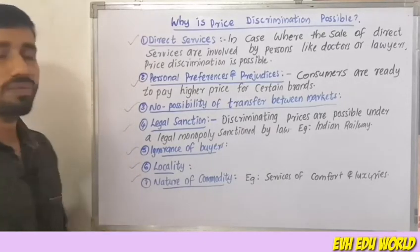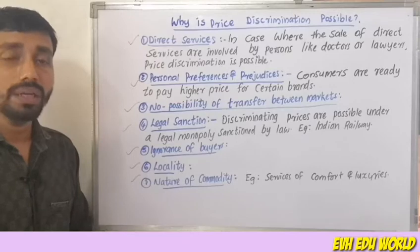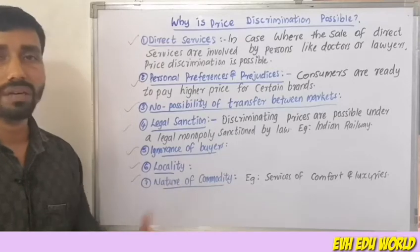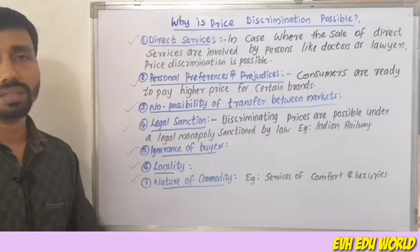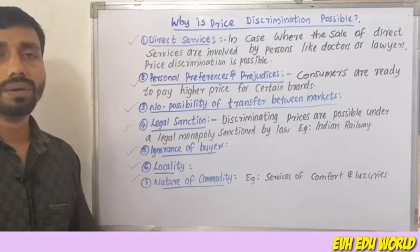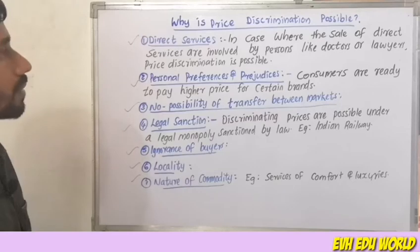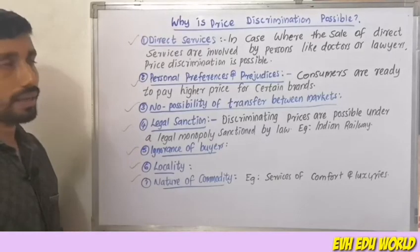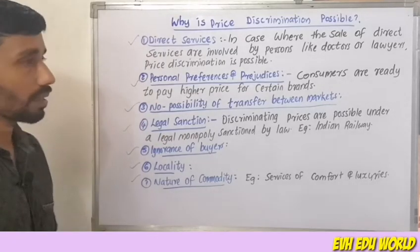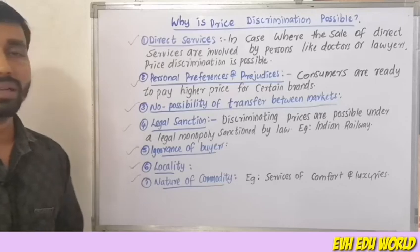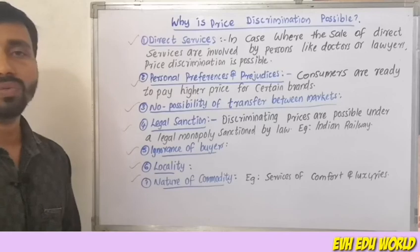The next condition is nature of commodity. For example, luxury goods and comfort goods may carry higher prices — so based on commodity differences, higher or lower prices may be charged. To summarize, price discrimination is possible due to: direct services, personal preferences and prejudices, no possibility of resale between markets, legal sanction, ignorance or bias, locality, and nature of commodity.